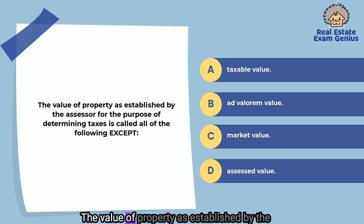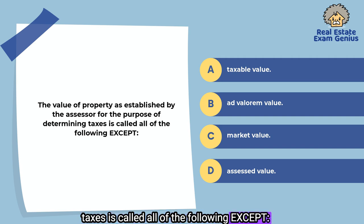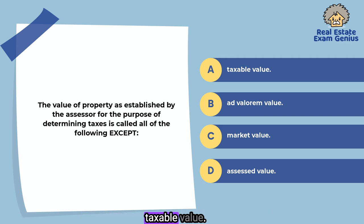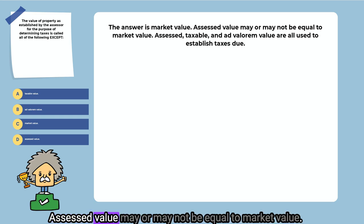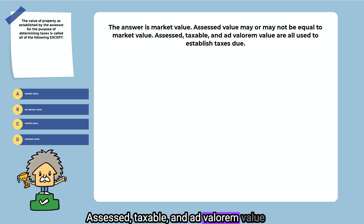The value of property as established by the assessor for the purpose of determining taxes is called all of the following except: taxable value, ad valorem value, market value, or assessed value. The answer is market value. Assessed value may or may not be equal to market value. Assessed, taxable, and ad valorem value are all used to establish taxes due.